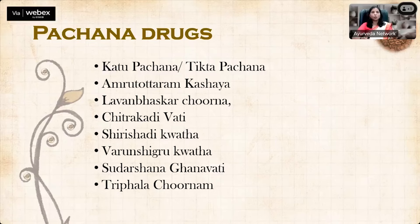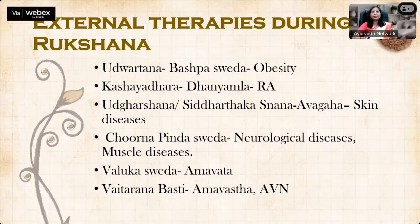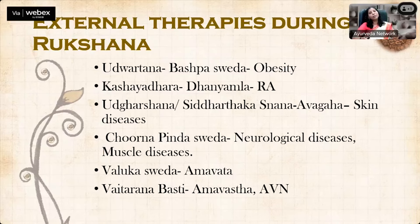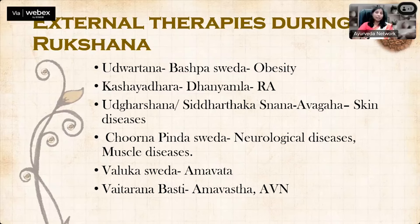As Ashtanga Hrudaya says: those with predominance of Medha or Kapha, chronic diseases, or Visham Agni should undergo Rukshana first. For obesity, Udhvartana with Vashpas Veda can be done till Nirama Avastha lakshanas appear. Kashaidhara or Dhanayam Ladhara can be given in RA patients with severe Aamavastha and severe pain — to reduce pain and make the patient comfortable for Sneha Pana. Udhgarshana or Siddhartha Kasnana for skin diseases, Churnapinda Sveda in neurological or muscle diseases like fibromyalgia, and Valukas Veda or Vaitarana in Aamavata or avascular necrosis of the femur head can be used as Rukshana therapy before Sneha Pana.